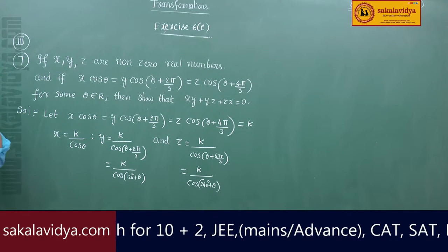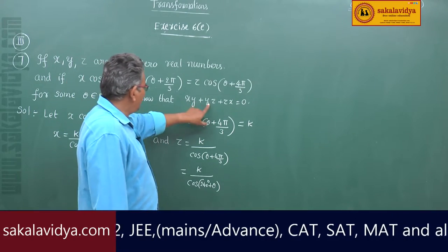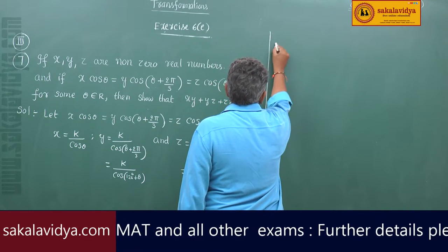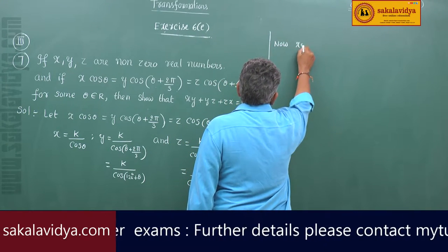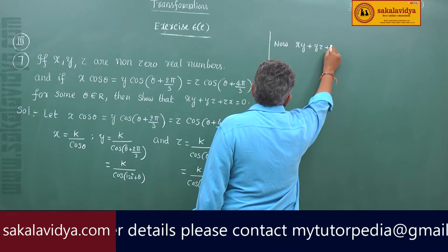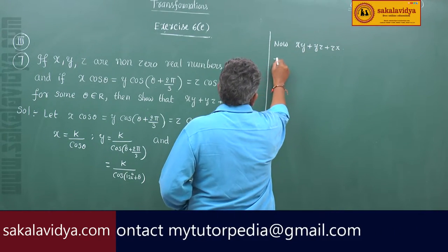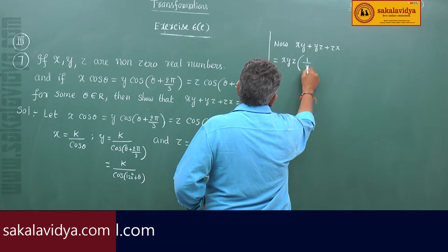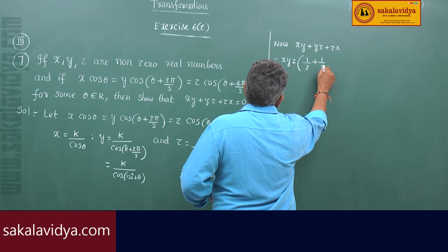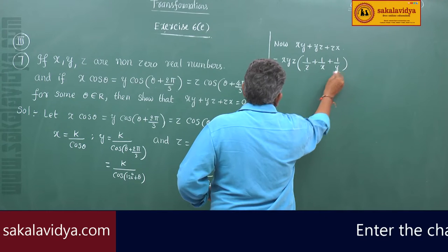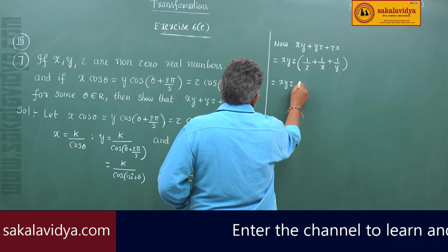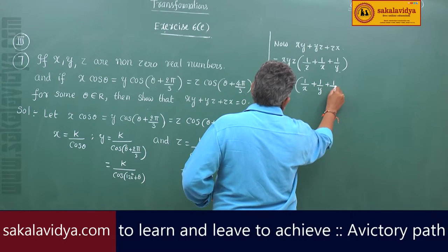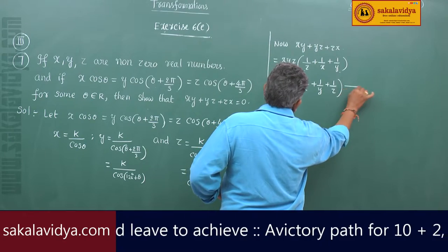So we have to find the value of xy + yz + zx. Consider xy + yz + zx. Now take xyz common; if you take xyz common, we get xyz·(1/z + 1/x + 1/x + 1/y), which can be rewritten as xyz·(1/x + 1/y + 1/z).